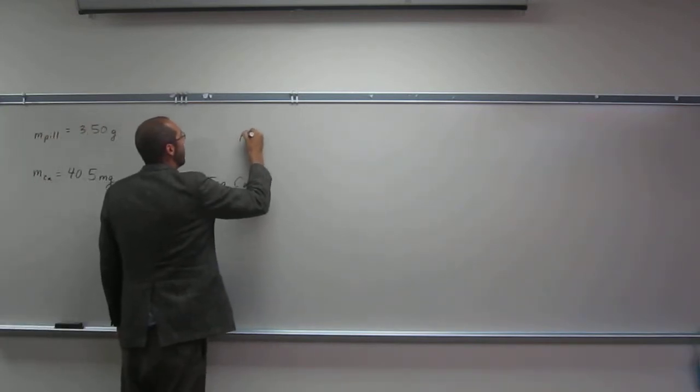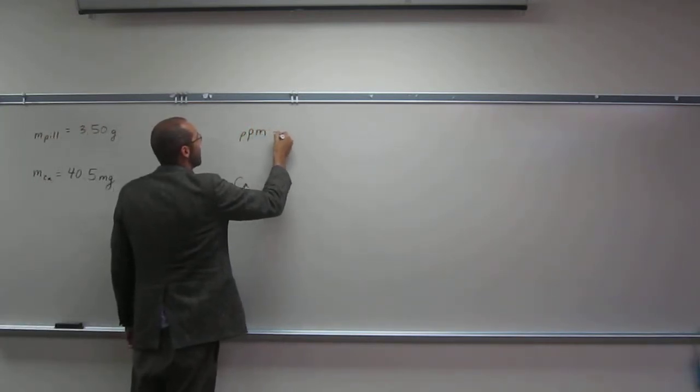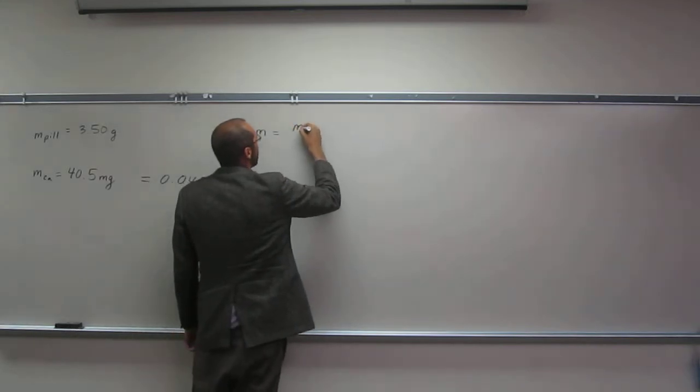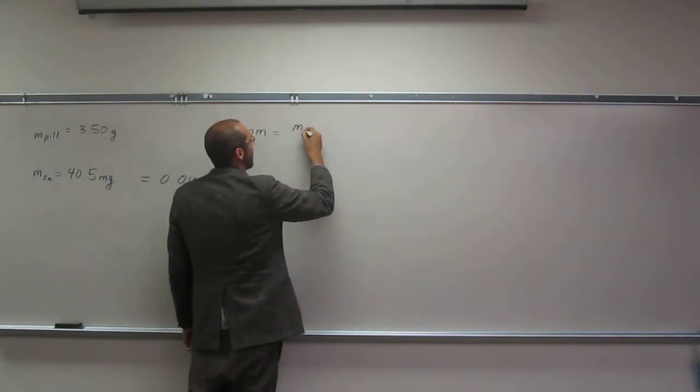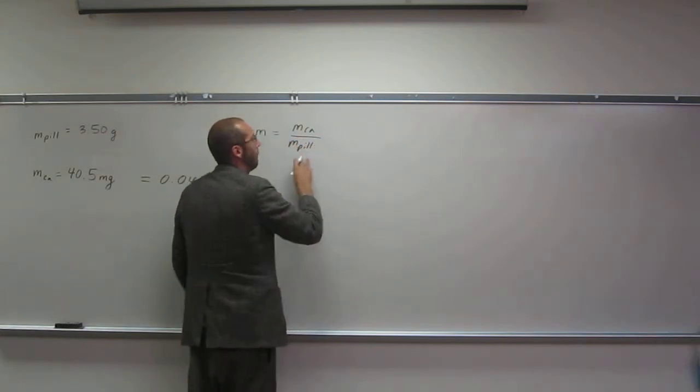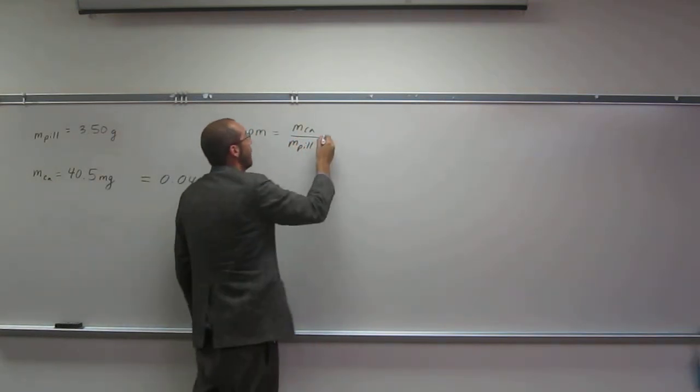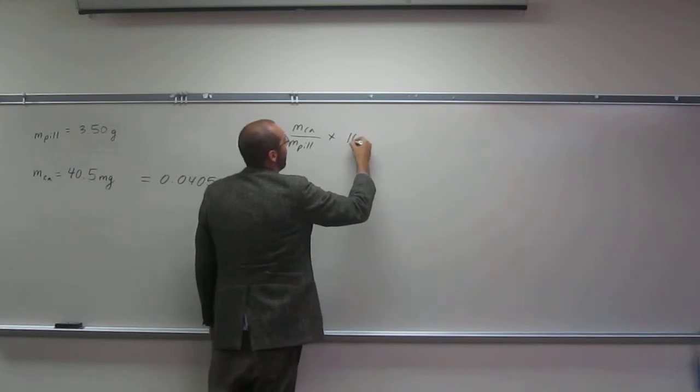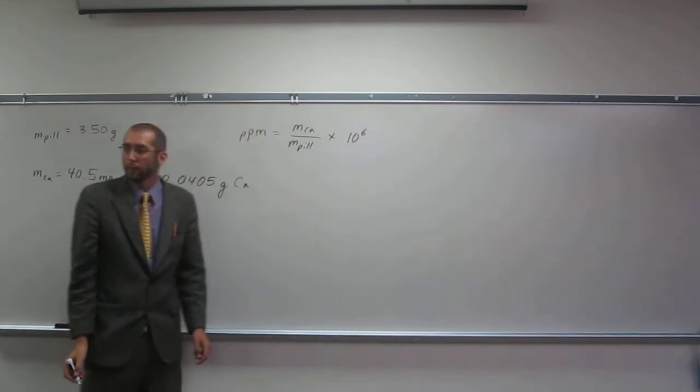So how do I do the PPM? Just like what we said, it's going to be the mass of, in this case, calcium divided by the mass of the pill. Make sure they're in the same unit, times a millionth, 10 to the 6th.